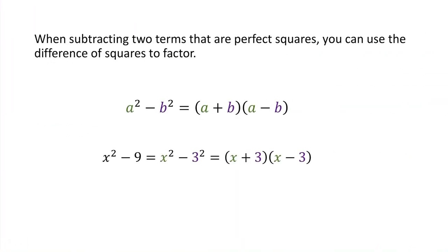When you're subtracting two terms that are perfect squares, you can use the difference of squares pattern to factor. If you have a² - b², that's going to be (a + b)(a - b).